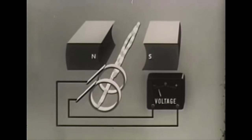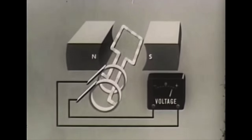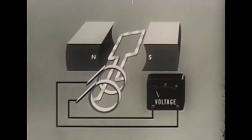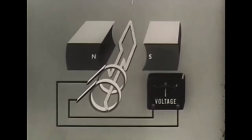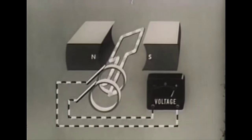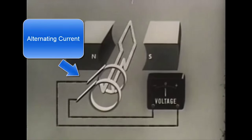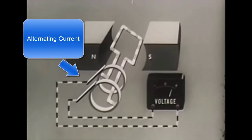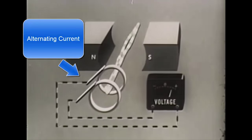Since they cut lines of force in opposite directions as they rotate, EMFs of opposite polarity will be generated in the conductors. In order to have current flow in this circuit, the polarities of the two conductors must be opposite.